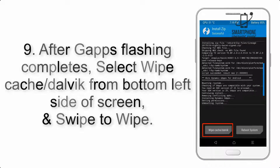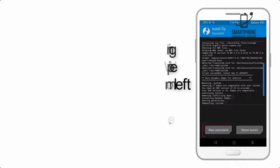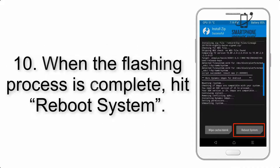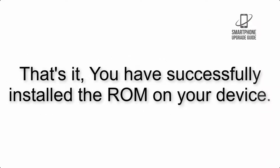Step 8: Flash the GApps zip package in the same manner. Step 9: After GApps flashing completes, select Wipe Cache and Dalvik from the bottom left side of the screen and swipe to wipe. Step 10: When the flashing process is complete, hit Reboot System. That's it — you have successfully installed the ROM on your device.